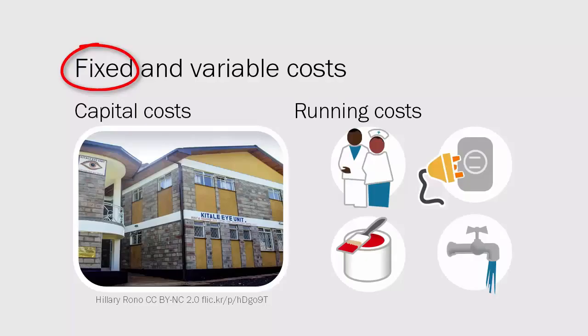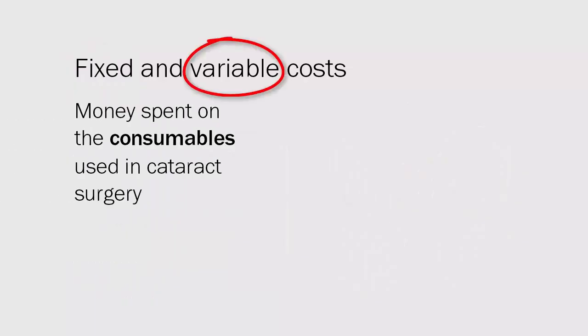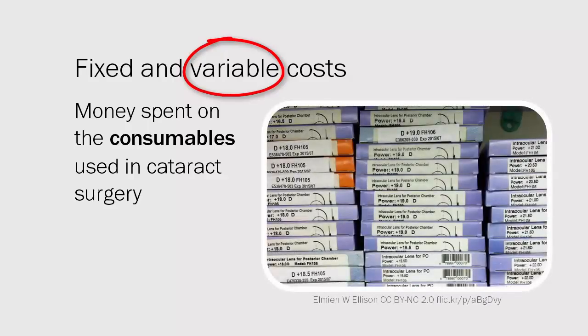When we break down the cost of running an eye care program we see that it is made up of fixed and variable components. Fixed costs include capital costs — the building, equipment, instruments, etc. — and running costs, which is the money spent on salaries, utilities like electricity and water supply, maintenance of the building, and rental or lease costs. Even if no surgery is done, fixed costs are the expenses that will have to be paid for.